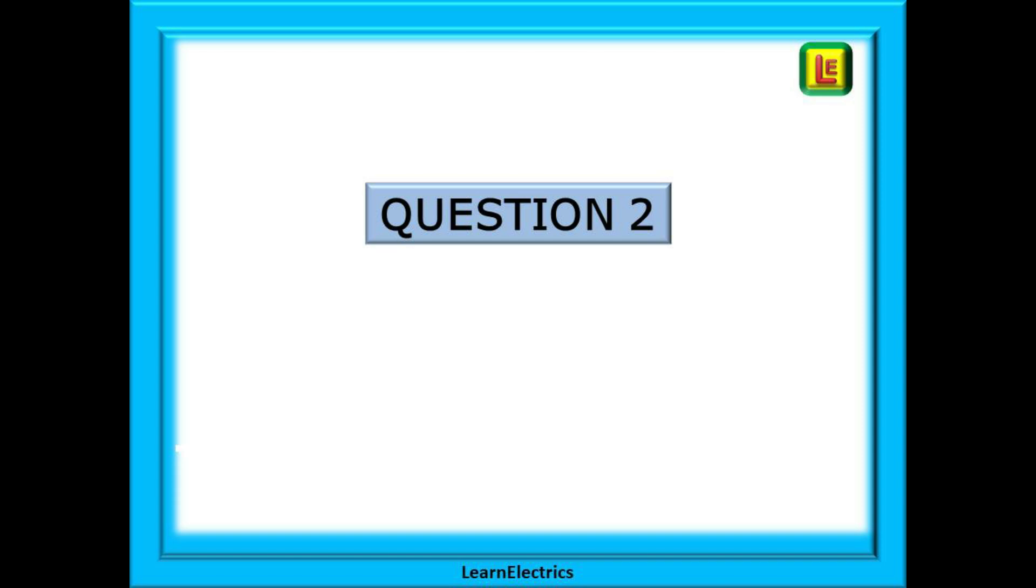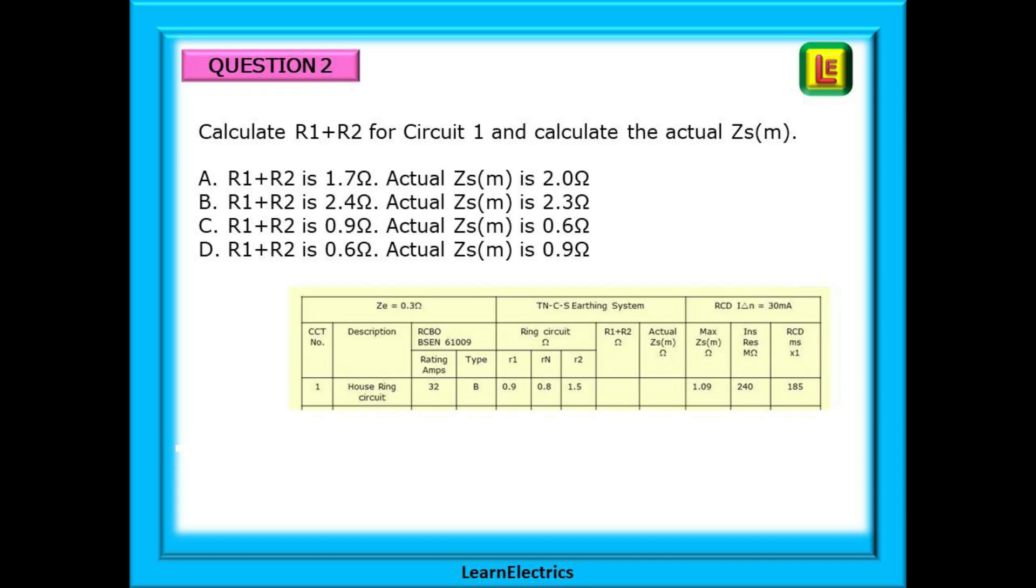Let's have a look at question 2 now. This time the question asks calculate R1 plus R2 for circuit number 1 and calculate the actual ZSM. Pause the video, find the answers and make a choice.